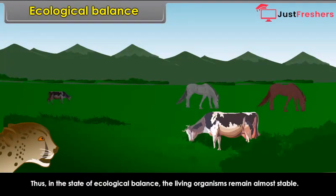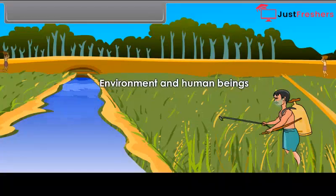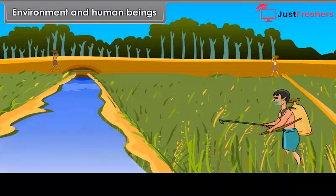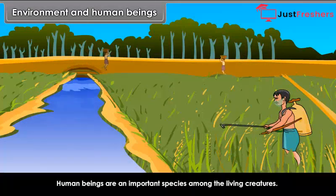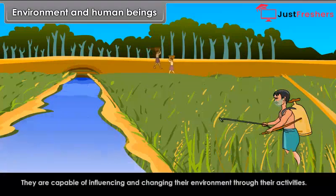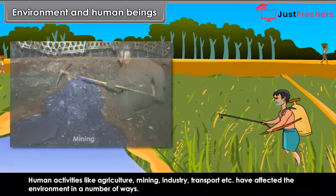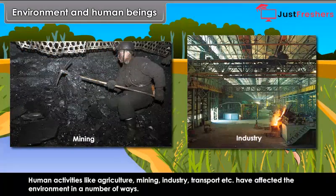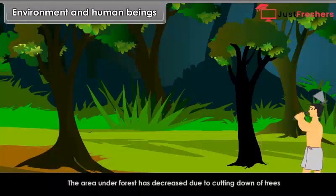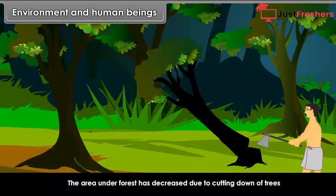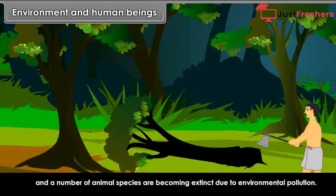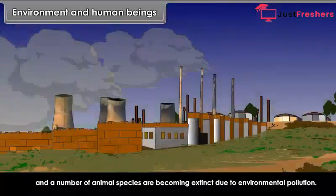Environment and human beings: Human beings are an important species among living creatures. They are capable of influencing and changing their environment through their activities. Human activities like agriculture, mining, industry, transport, etc. have affected the environment in a number of ways. The area under forest has decreased due to cutting down of trees, and many animal species are becoming extinct due to environmental pollution. Human activities are aimed at satisfying increasing needs from the environment.